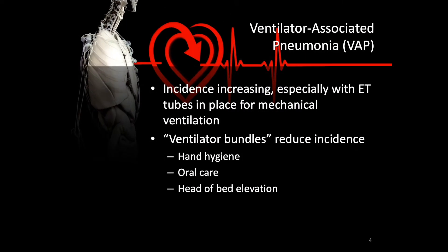Pneumonia can be categorized as community-acquired, hospital-acquired, healthcare-acquired, or even ventilator-acquired. Ventilator-acquired pneumonia occurs with the presence of an endotracheal tube and usually occurs within 24 to 72 hours after intubation. Ways to reduce ventilator-acquired pneumonia include the use of ventilator bundles, which includes hand hygiene, oral care, and keeping the head of the bed elevated at least 30 degrees.